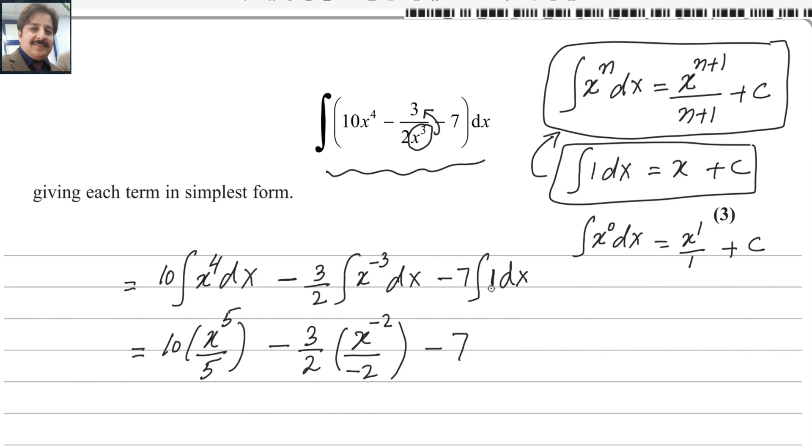Then minus 7 is outside, and the integration of 1 is x. As I told you earlier, it will be 7x. And at the end, you have to add a constant c.